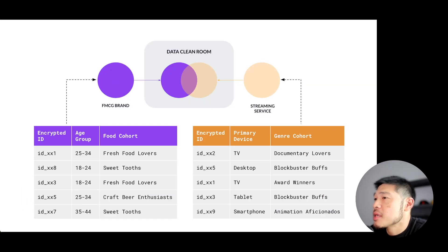Let's say the data set for the FMCG brand includes, and the data set is the left side table here with the purple headers. It includes encrypted customer IDs, the customer's age group, and the food cohort that the customers belong to. And the segmentation would have been done ahead of time.